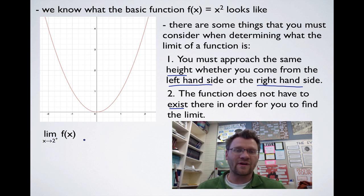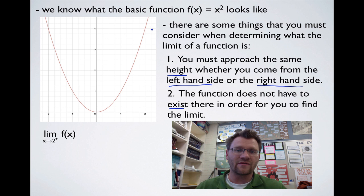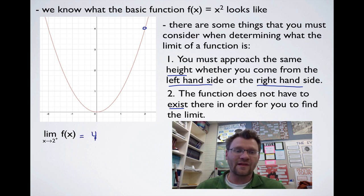There's a little superscript positive sign, which means we're coming from the positive side of 2 — that is, from the right-hand side. So as x approaches 2 from the positive side, which is the right-hand side, you can see that the limit would be 4. As x comes down this graph from the right-hand side, it's approaching a height of 4. So we say the limit as x approaches 2 from the positive side of f(x) is equal to 4.